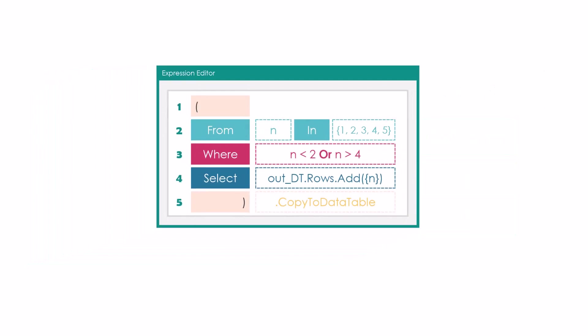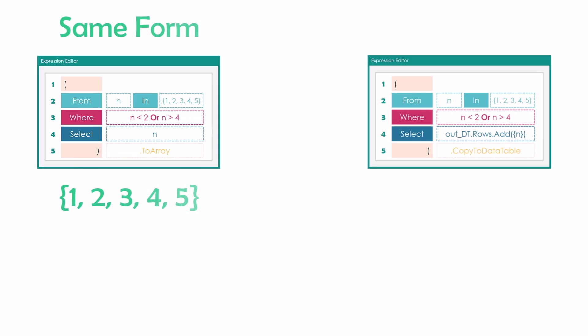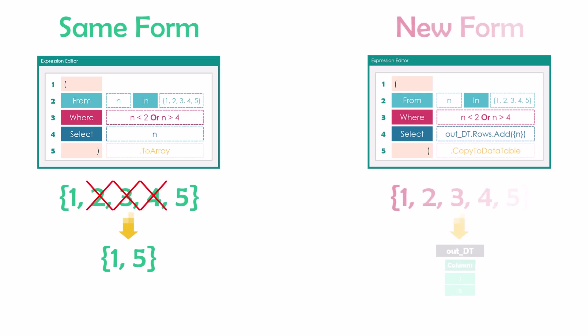These are the two ways to select data. In summary, projection is to select data from the data source — either in the same form, as in the first query, or in a new form, as in this query. This is how the select operator works.